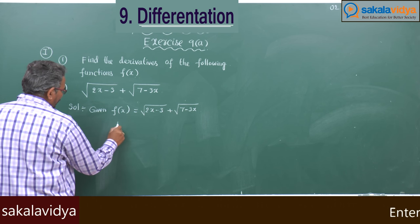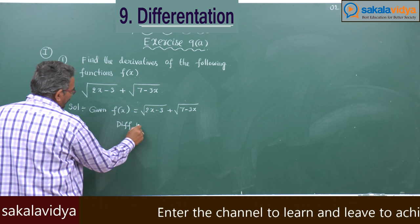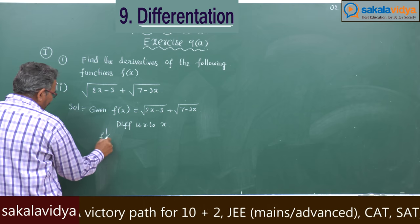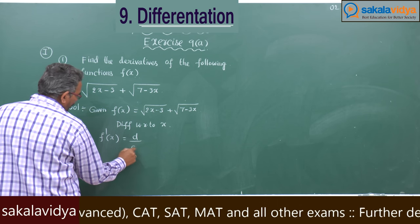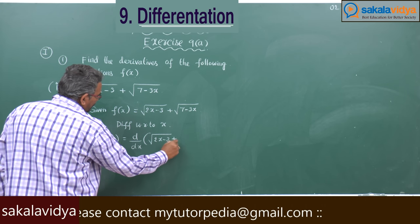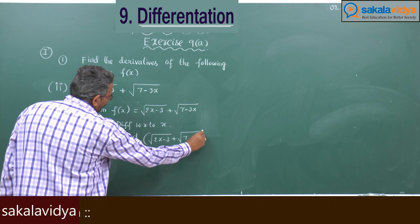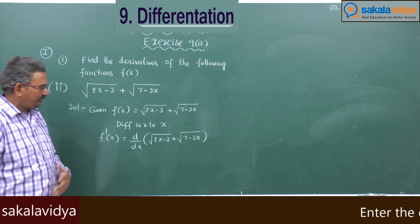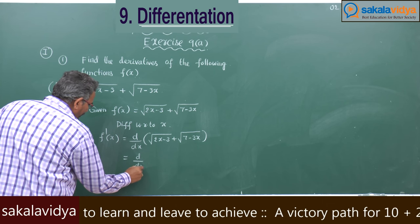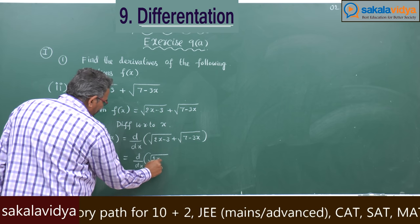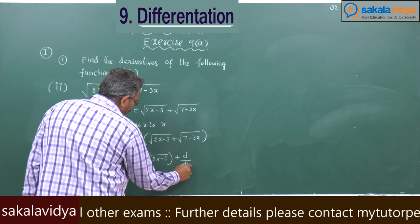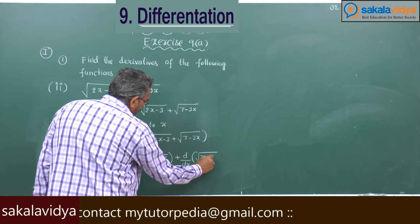Now let us differentiate with respect to x. f'(x) is equal to d/dx of root(2x minus 3) plus root(7 minus 3x). This can be written as d/dx of root(2x minus 3) plus d/dx of root(7 minus 3x).